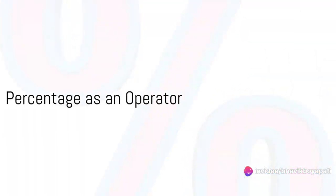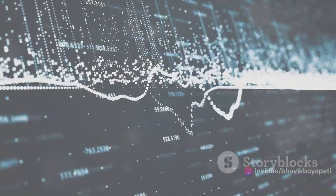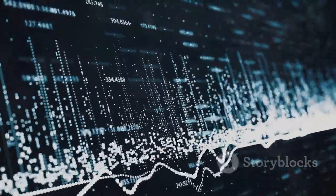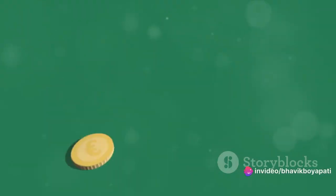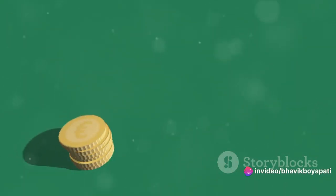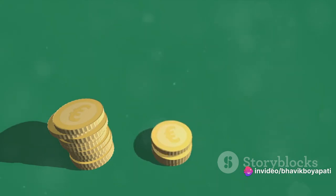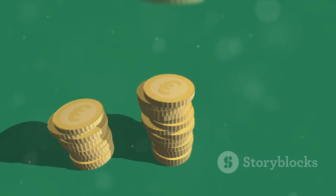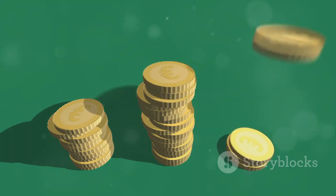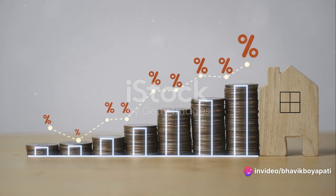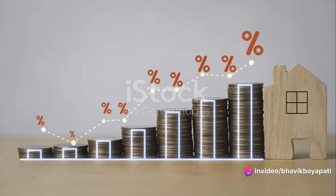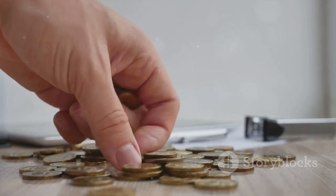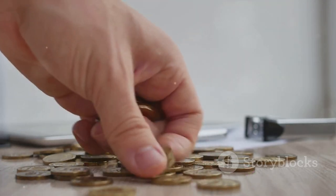Did you know that we can also use percentages as operators? Percentages are not just static numbers — they can also be dynamic operators that influence and manipulate other numbers. Suppose you have a sum of money, say £100, and you want to increase it by 20%. The percentage here is acting as an operator, modifying the original sum. You multiply your original sum, £100, by the percentage increase — which is 20%, or in decimal form, 0.2. The result is £20. This is the increase.